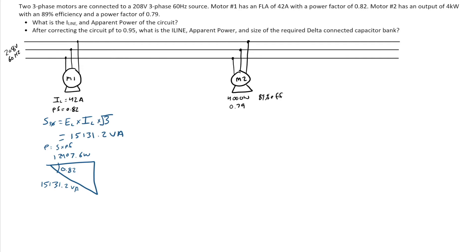And I can calculate my true power of 12,407.6 watts. Then I use trusty Pythagorean's theorem, S squared minus P squared to give me Q. So that's 8,660.5 VARs. So that's how I would go through the calculation on motor one.